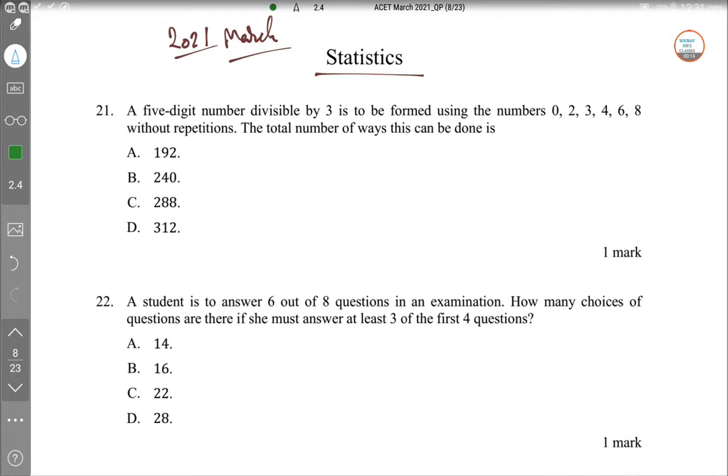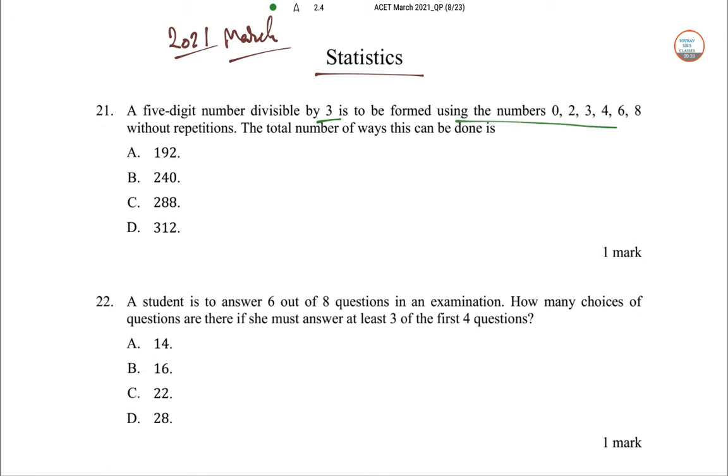So pahla sawaal hai, a 5 digit number divisible by 3 is to be formed using 0, 2, 3, 4, 6, 8 without repetition. So total number of ways it can be done. So 5 digit number can be formed using 0, 2, 3, 4, 6 or by using 0, 3, 4, 6, 8. Since the sum of digits in this case is divisible by 3, so sum of digit divisible by 3 hai.